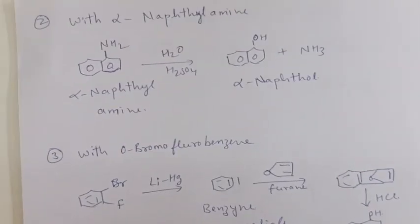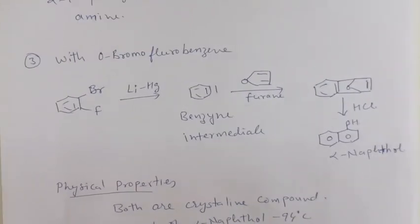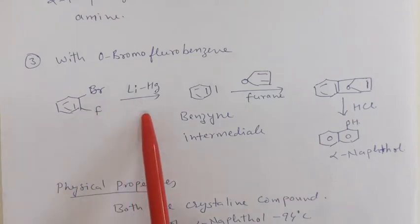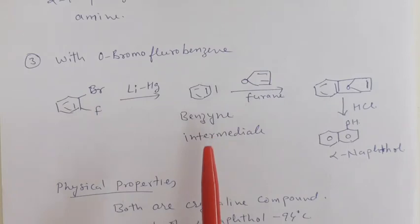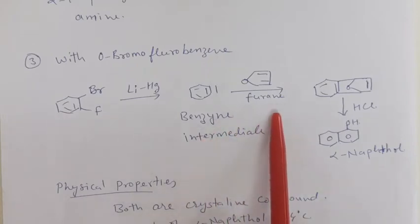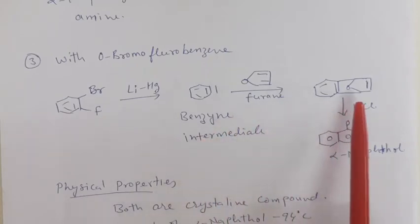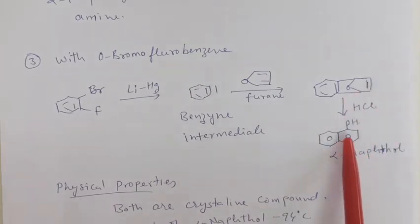Another synthesis is the reaction of ortho-bromofluoride with lithium amalgam, which eliminates bromide and fluoride ions and gives a very reactive intermediate, i.e., the benzyne intermediate. This reacts immediately with furan to give an addition compound. This reacts with HCl, the bond is broken, and we get alpha naphthol.